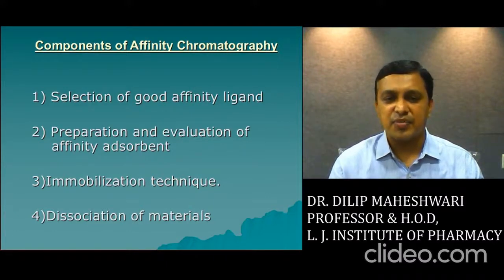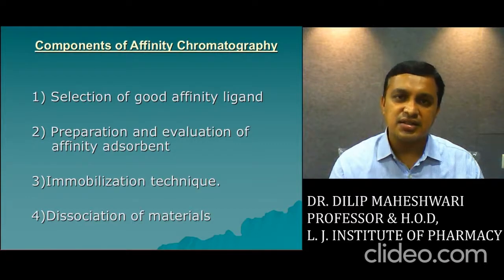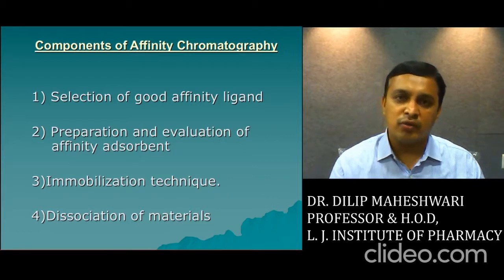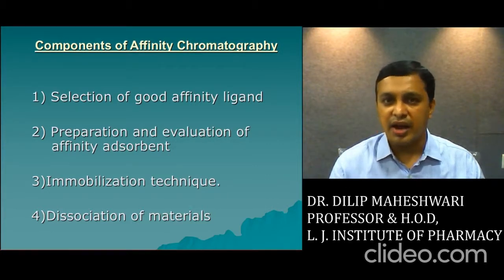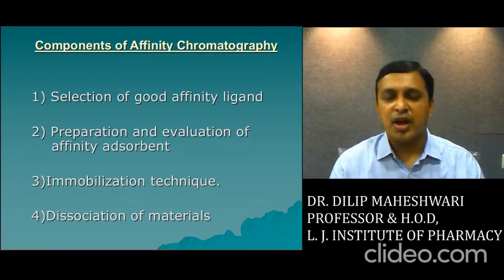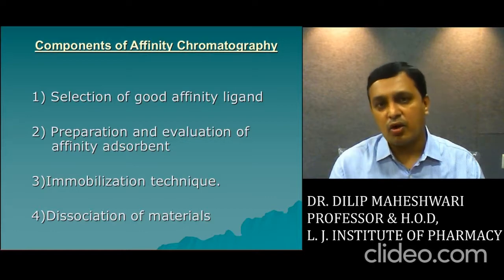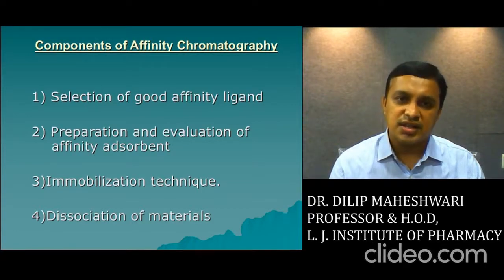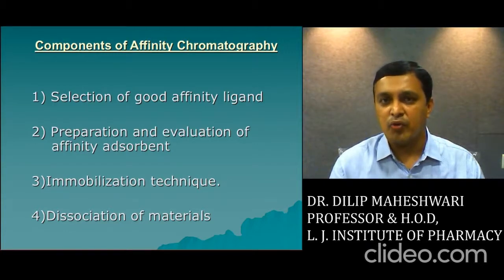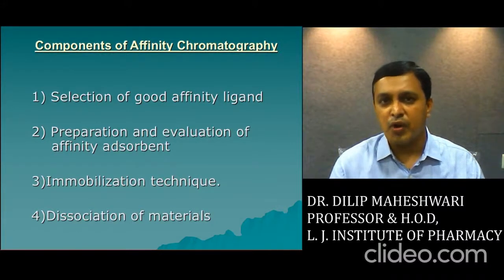The fourth step is dissociation of material. Once the complex is made between your sample and ligands and the other impurities have been removed, you have to release your compound from the complex. For that, different types of buffers are used. You change the pH of the environment between the ligand-substance complex so it can be easily removed. Generally, potassium thiocyanate is used as a displacement agent to remove your compound from the complex, giving you a very purified compound.